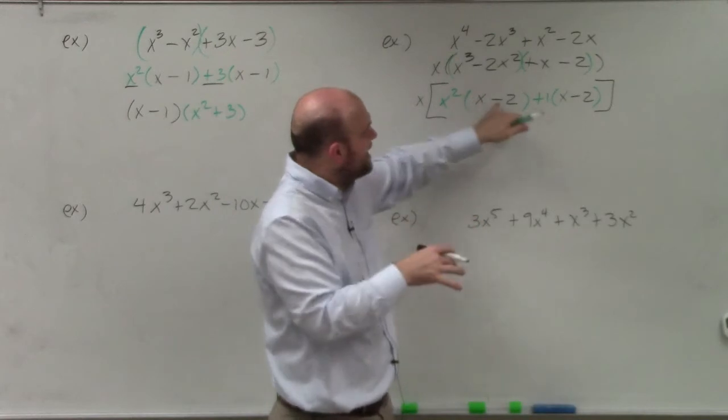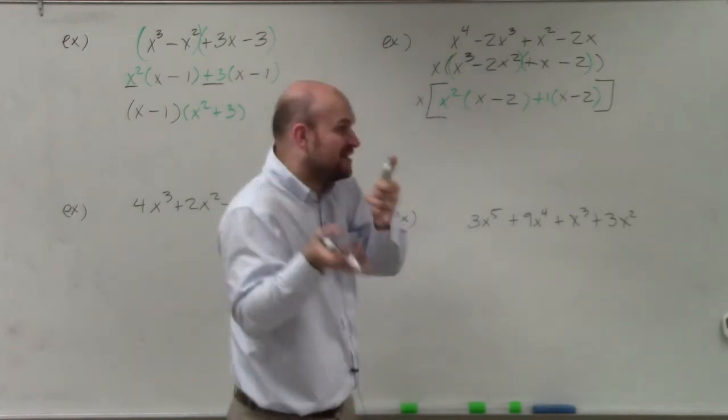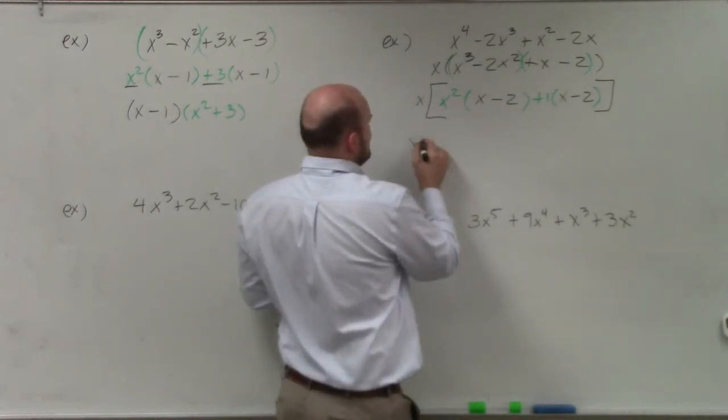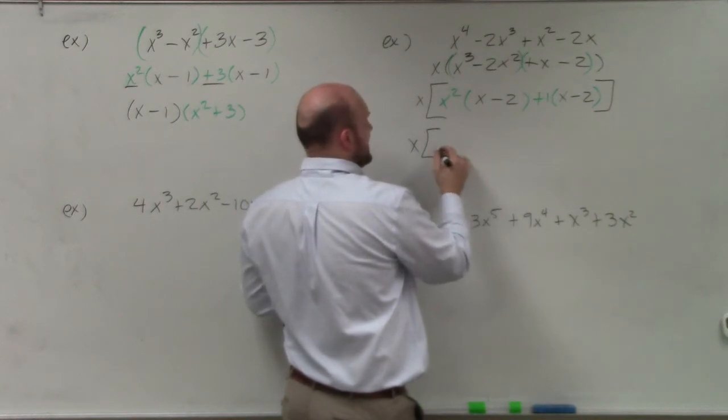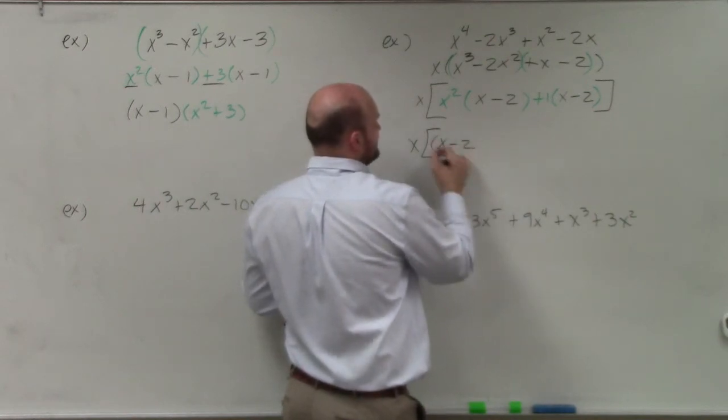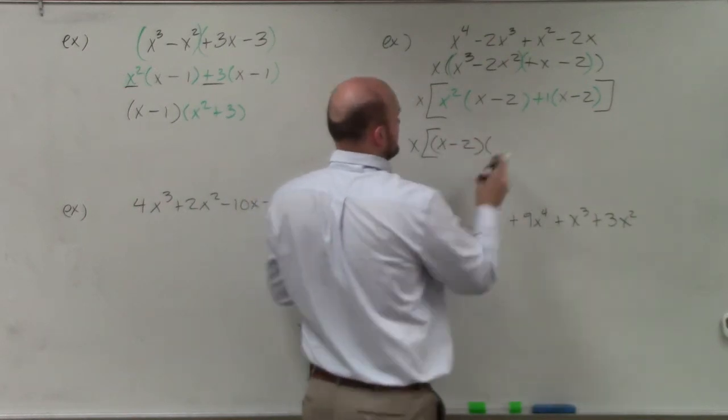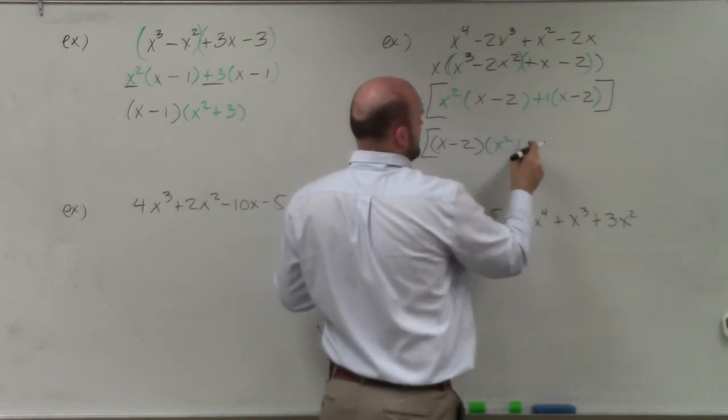But by factoring out, now I have binomials x minus 2 that are in common that I can now factor out. So by factoring that out, I'm left with x minus 2 times x² plus 1.